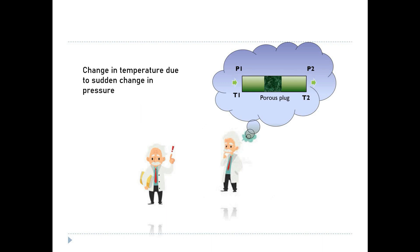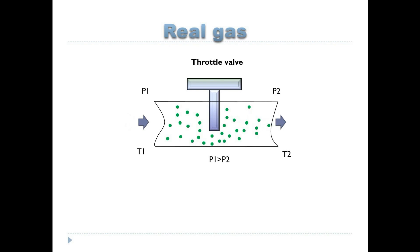When a real gas is passed through any restriction, such as throttling wall, porous plug or any ordinary wall at constant enthalpy, it undergoes change in pressure.